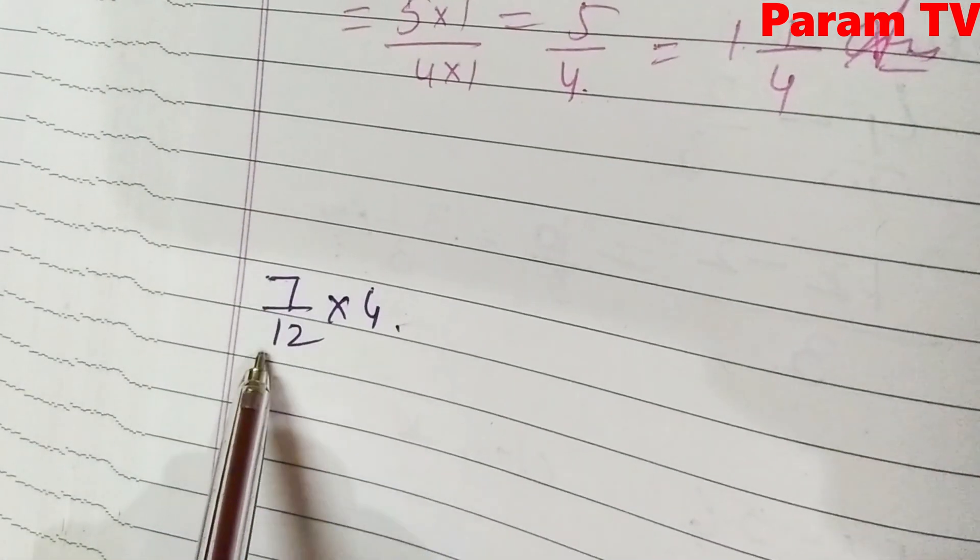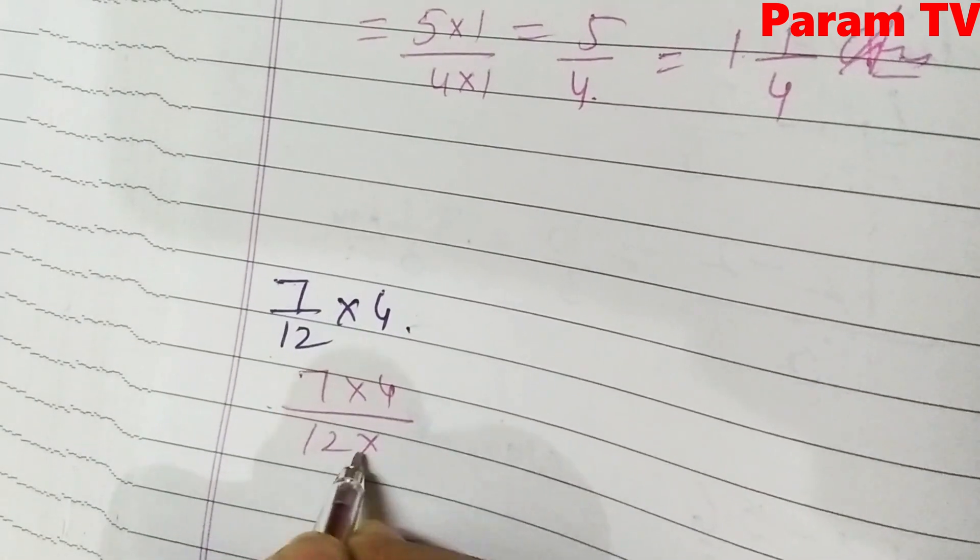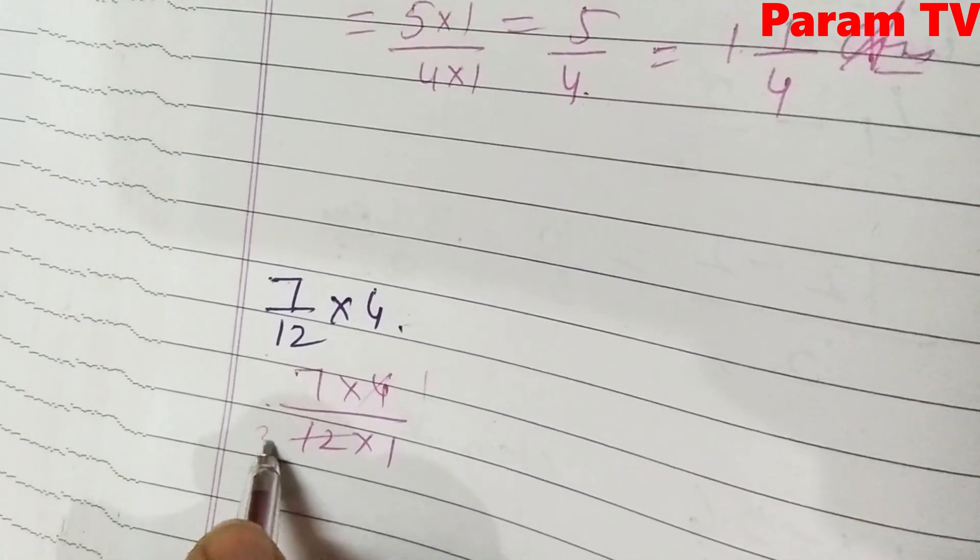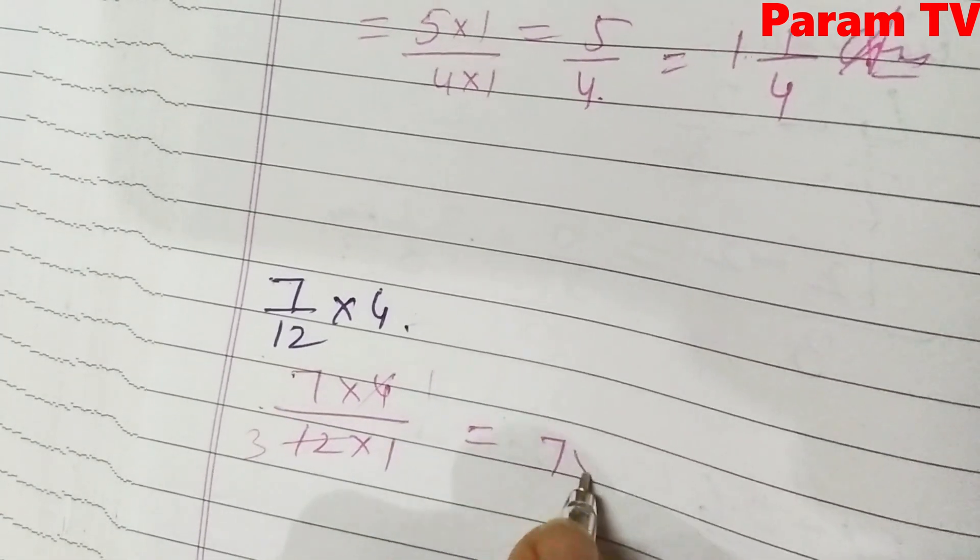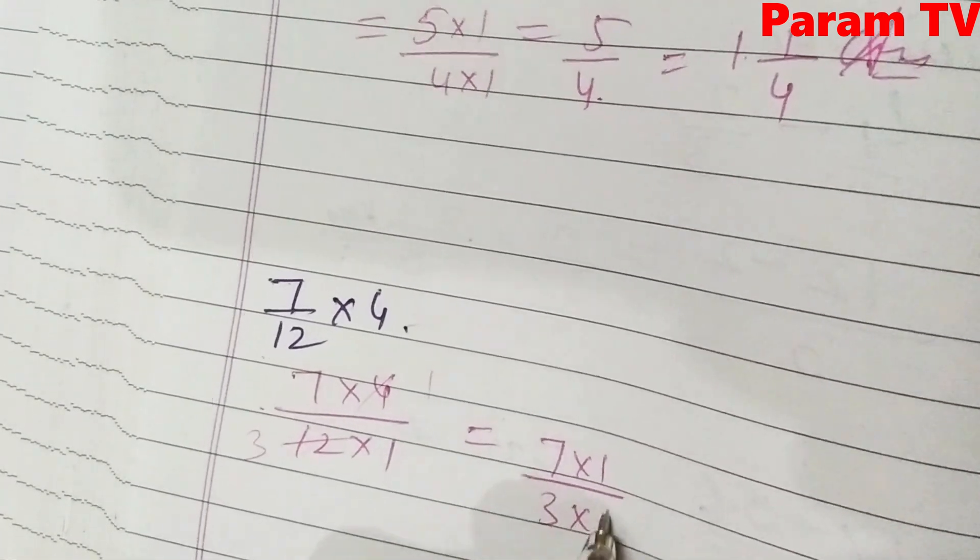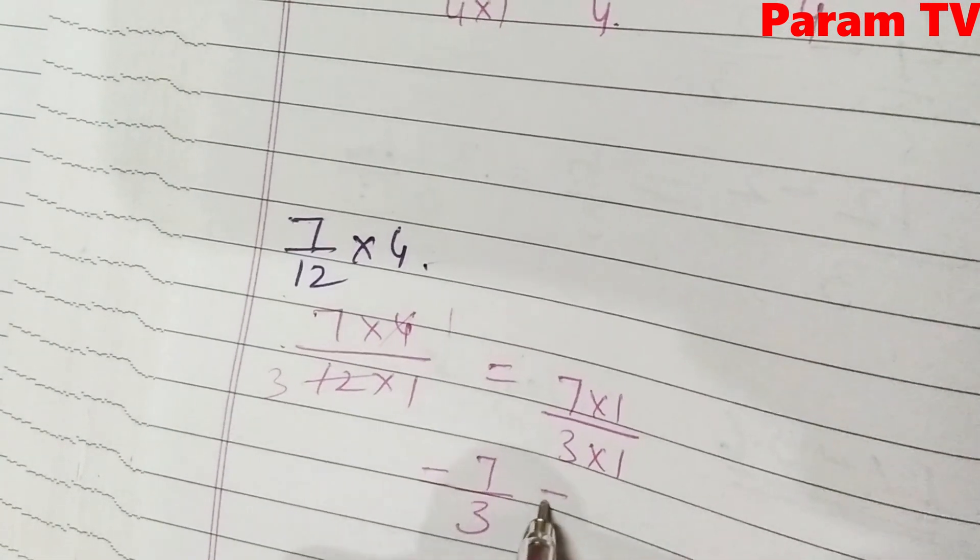Next is 7 by 12 into 4. 7 into 4 over 12 into 1. 4 1s are 4, 3s are. So this is 7 into 1 over 3 into 1. This will give you 7 by 3.